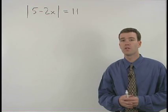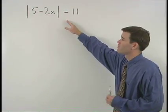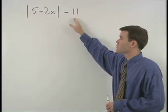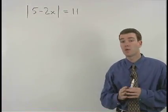Using the rule we learned in the previous example, we can solve the equation the absolute value of 5 minus 2x equals 11 by first splitting things up into two separate equations.